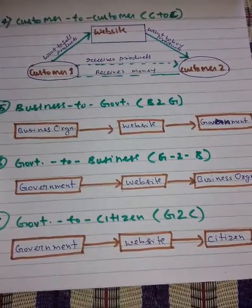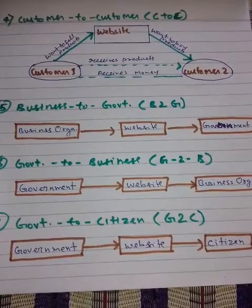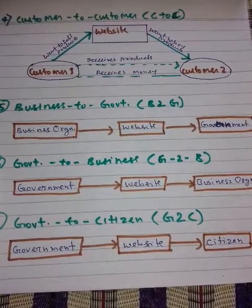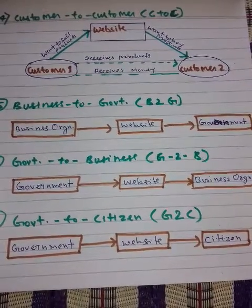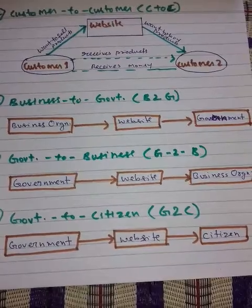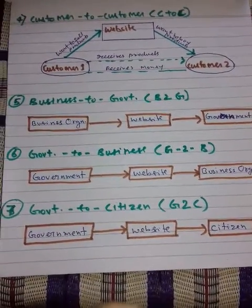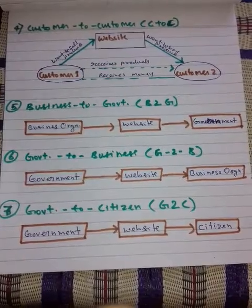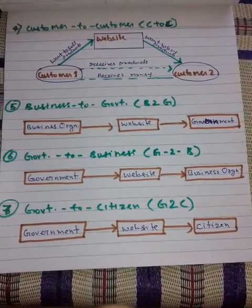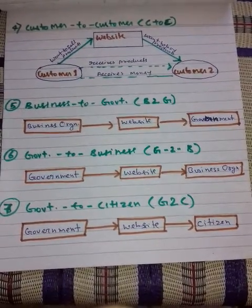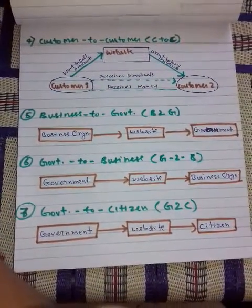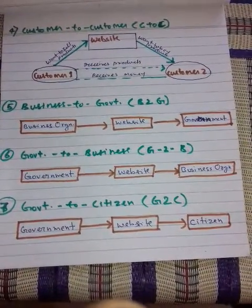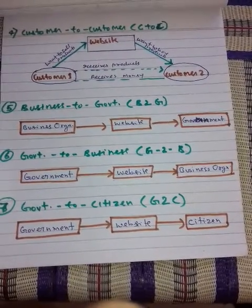E-governance integrates various standalone systems and services, covering Government to Customer, Government to Business, and Government to Government interactions. Through e-governance, government services are made available to citizens — also known as Government to Citizens (G2C) — in a convenient, efficient, and transparent manner. The three main target groups in e-governance are government, citizens, and business and interest groups, and there are no distinct boundaries between them.